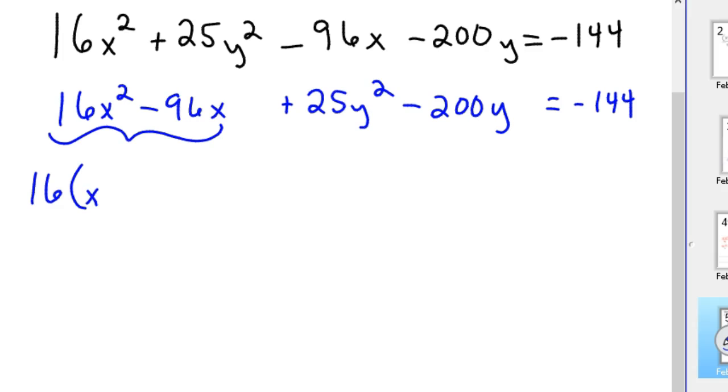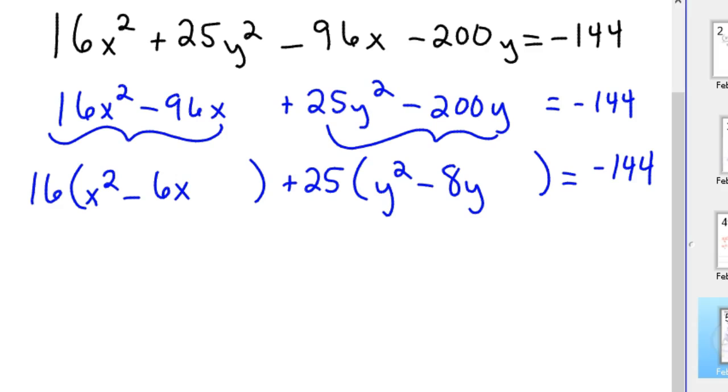So if you take a 16 out, you'd have x² - 6x. I'm going to leave a little spot to complete the square. I'm going to take a 25 out of the second group. And so you'd have y² - 8y. Again, leave a little spot for deposit. And we'll leave the -144 there.